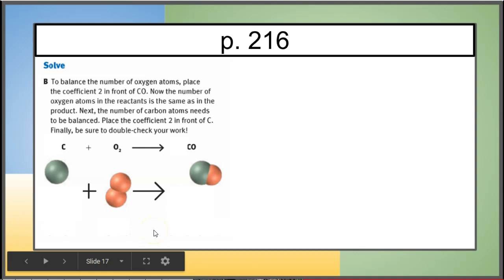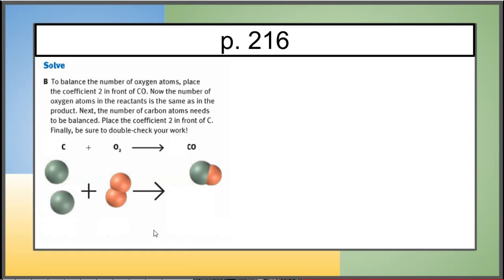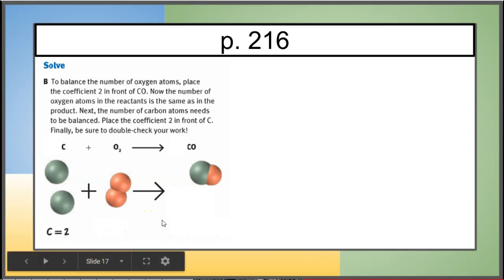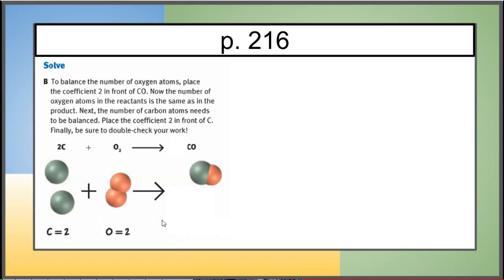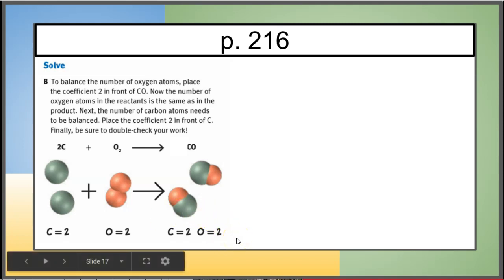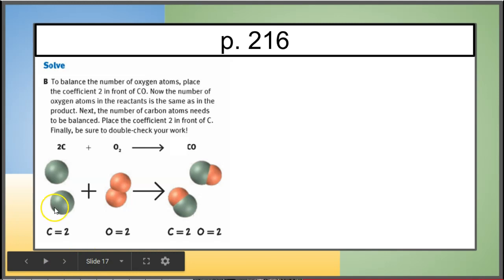Now to balance the number of oxygen atoms you have to use coefficients. We say two carbon atoms, two oxygen atoms, and two carbon monoxide molecules — so two carbons and two oxygens on each side. You can see how a coefficient of two is placed here because there are two of these molecules.